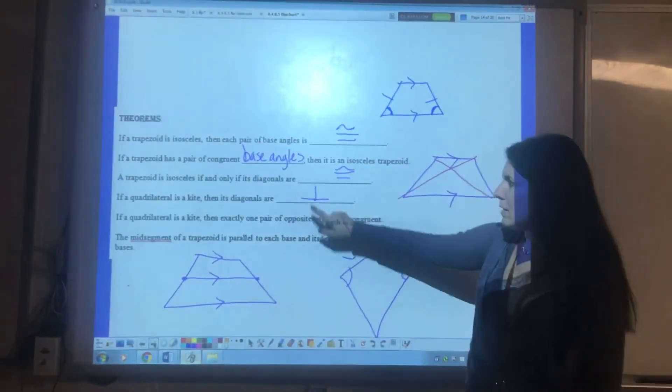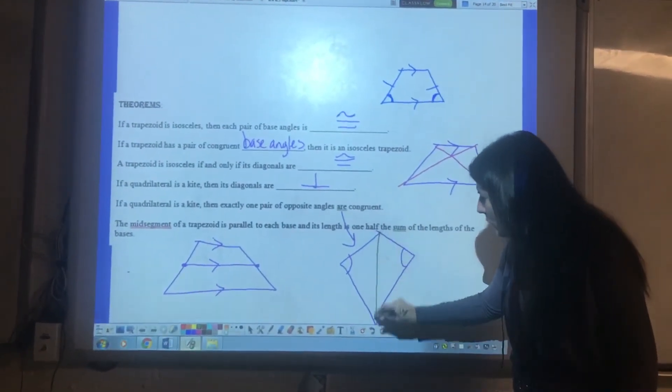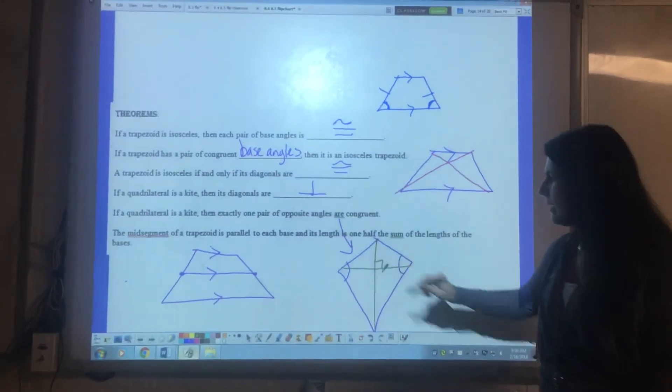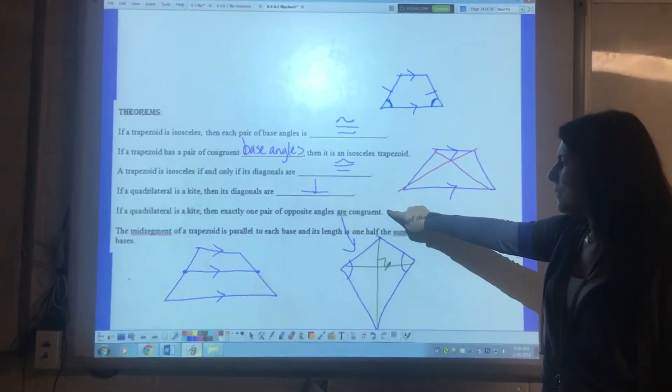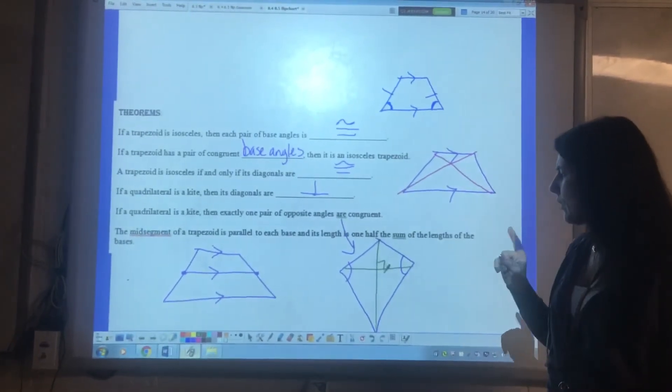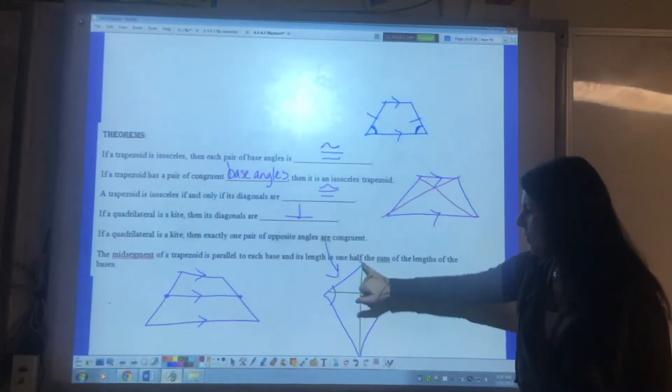With a kite the diagonals are perpendicular. So here's my kite. When I draw these diagonals they meet at a 90 degree angle. We also have opposite, one pair of opposite angles are congruent. If you look at a kite these two angles are going to be congruent. These two are not.